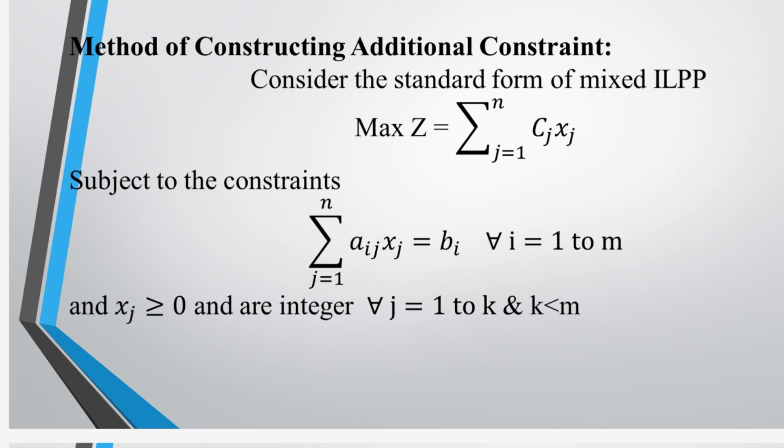Maximize Z equal to summation j equal to 1 to N of Cj·Xj, subject to the constraints summation j equal to 1 to N of Aij·Xj equal to Bi, for all i equal to 1 to M. And Xj greater than or equal to 0, and integer for all j equal to 1 to K, where K less than M.